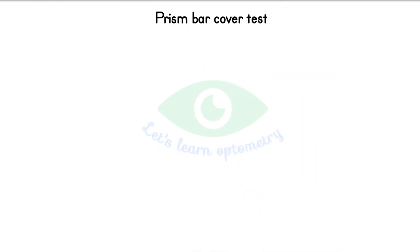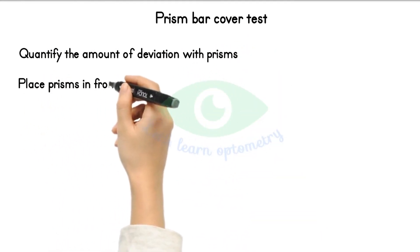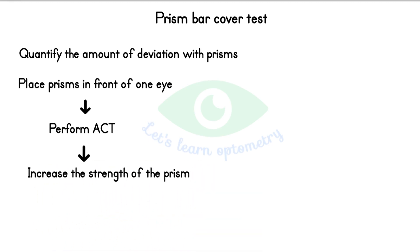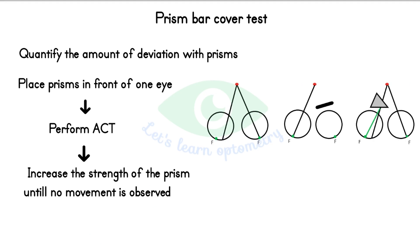Prism bar cover test: in the prism bar cover test we quantify the amount of deviation with prisms. We place the prism in front of one eye — the direction of prism placement is important. The apex of the prism is placed towards the direction of deviation. For example, for an eso deviation we use a base-out prism. After placing the prism we perform the alternate cover test and increase the strength of the prism until no movement is observed. This is a case of eso deviation — the light rays fall on the non-foveal point of the left eye; after placing a prism of sufficient power it falls on the fovea.